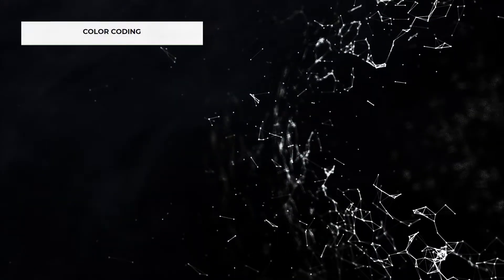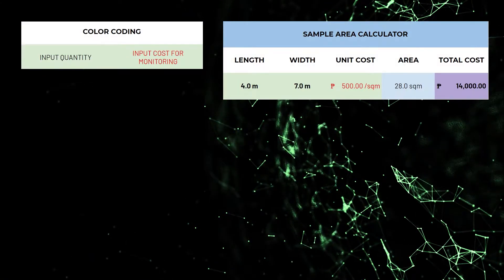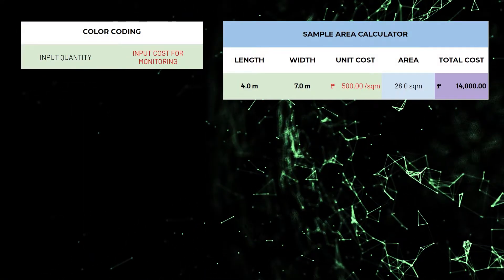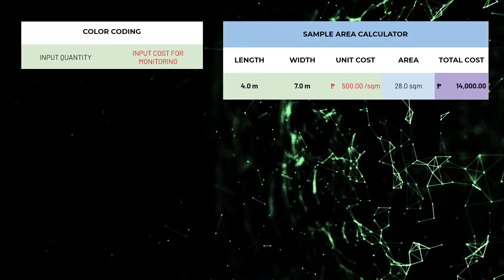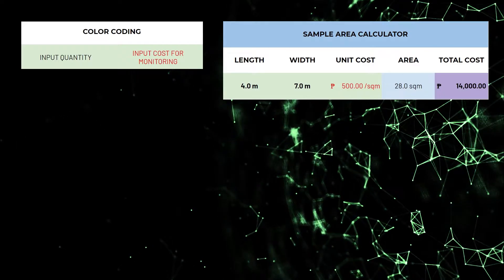Let's discuss what the colors mean using this simple calculator as an example. Green is input. This is where all the variables go: design measurements, preferred spacing, and other required information.